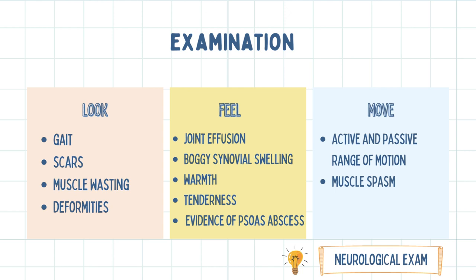Look for scars or sinuses, muscle wasting, assess the gait, and observe any deformities. Feel for joint effusions, boggy synovial swelling, warmth, and tenderness. Actively and passively move the affected area to assess range of motion and to identify where the problem may be. Finally, a neurological exam must be done as it may reveal any sensory and/or motor fallout.